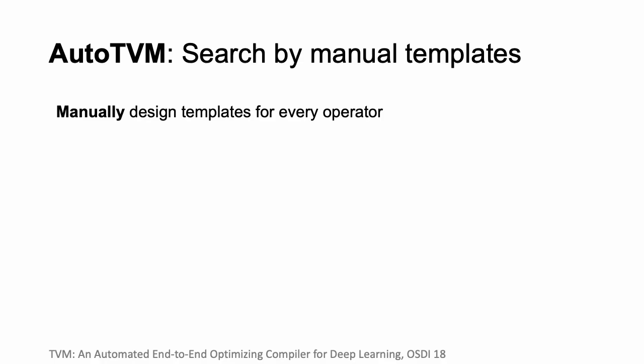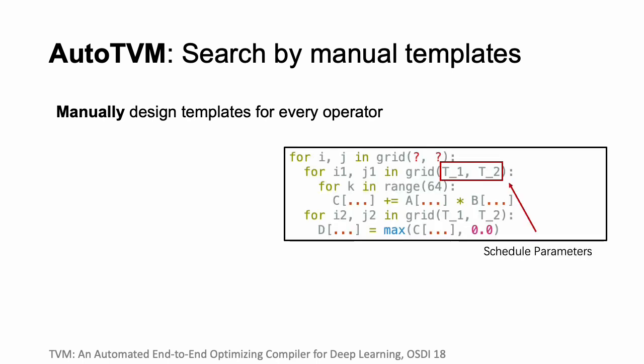We first show some related work. AutoTVM searches for optimal programs by manual templates. As shown in the figure, the general program structure of a scheduled template is fixed with only parameters to be tuned. AutoTVM manually designs templates for every deep learning operator. These templates have limited search spaces due to the fixed program structure and require a large amount of effort from domain experts.